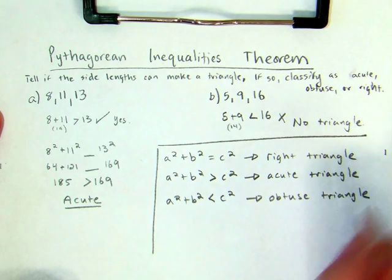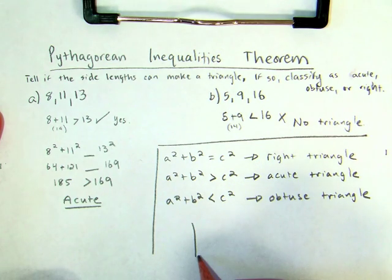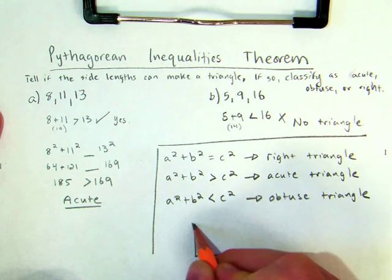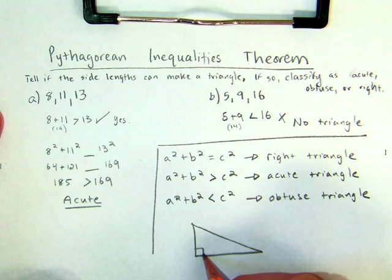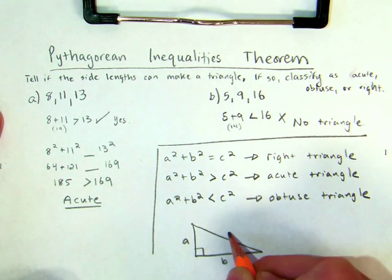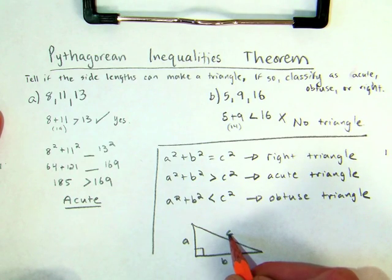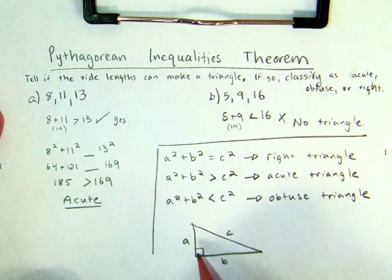And this makes sense because if I'm looking at a triangle, I know a right triangle is where a squared plus b squared is equal to c squared. If a squared plus b squared winds up being greater than, meaning the c squared is going to be less than...